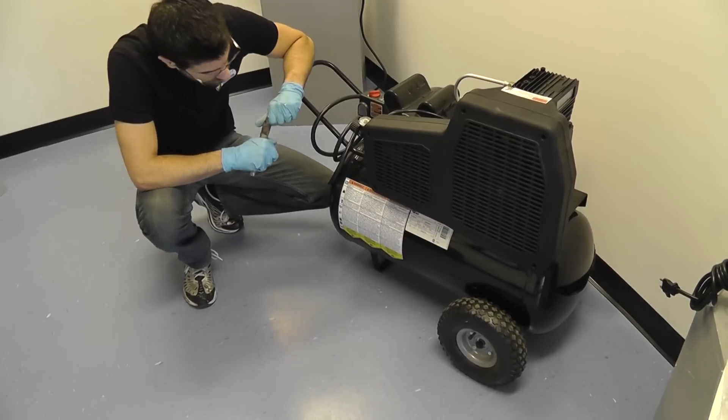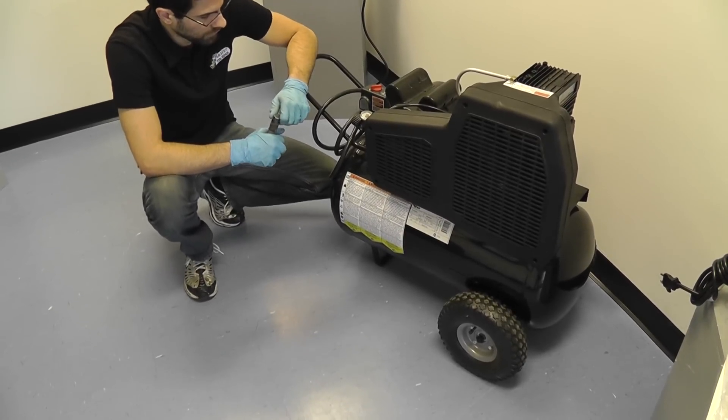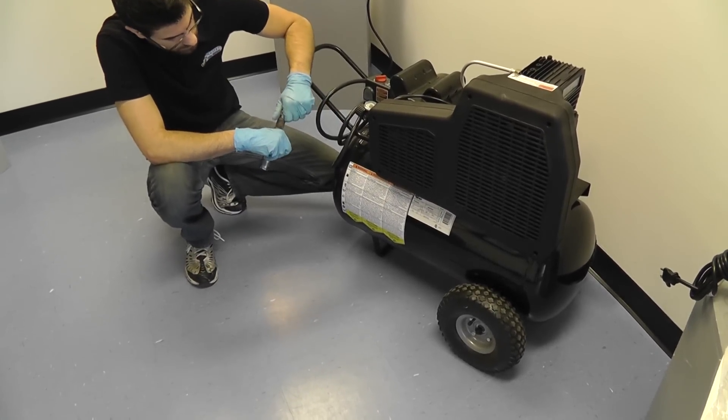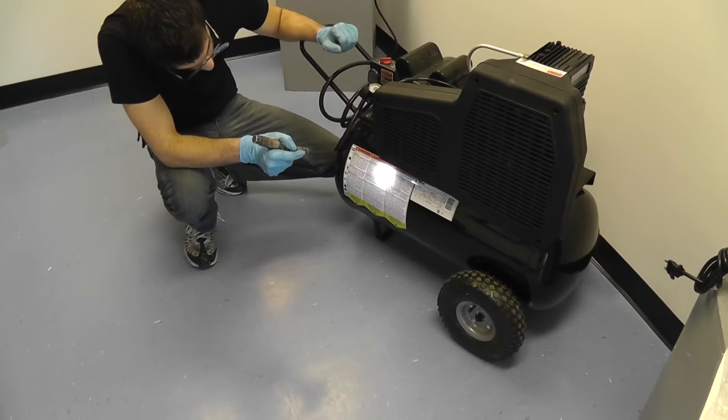For instance, this is an industrial air unit by Sanborn. To find a model number on this portable compressor, it should be on the tank on a label here.